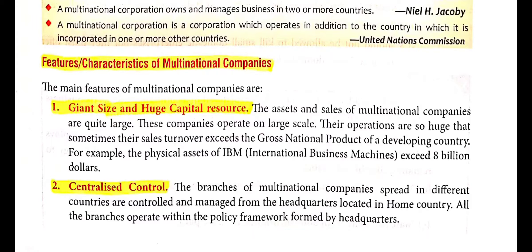Second point: centralized control. Global enterprises have centralized control, meaning their head office or headquarters in the home country frames all policies, rules and regulations. The branches of multinational companies spread in different countries are controlled and managed from the headquarters. All branches operate within the policy framework formed by headquarters.